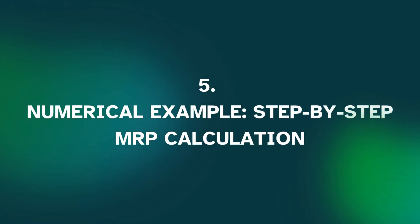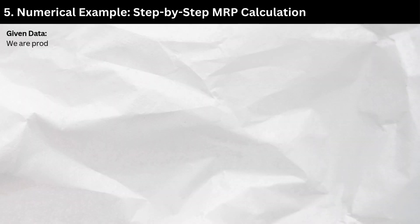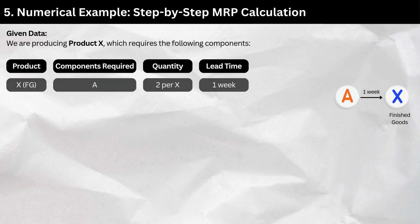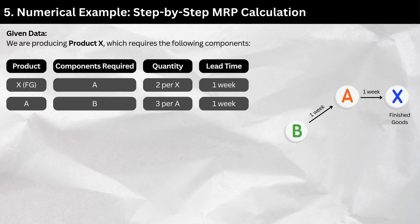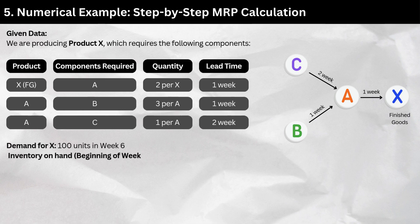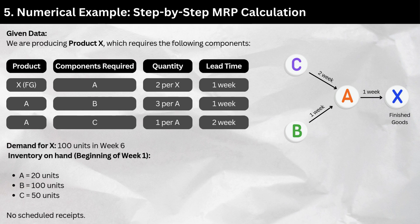Numerical Example — step-by-step MRP calculation. We are producing product X, which requires the following components. X (finished) requires component A: 2 per X, lead time 1 week. A requires component B: 3 per A, lead time 1 week. A also requires component C: 1 per A, lead time 2 weeks. Demand for X: 100 units in week 6. Inventory on hand at the beginning of week 1: A = 20 units, B = 100 units, C = 50 units. No scheduled receipts.